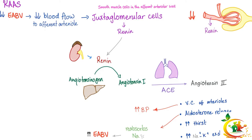Now let's talk about the renin-angiotensin-aldosterone system. If the effective arterial blood volume is low, blood flow to the afferent arteriole is low. The juxtaglomerular cells — specialized smooth muscle cells in the afferent arteriole wall — sense this and secrete renin. Renin converts angiotensinogen to angiotensin-1, which is converted to angiotensin-2 via ACE. Angiotensin-2 causes vasoconstriction of arterioles, raising blood pressure, and triggers aldosterone release, which reabsorbs salt and water, increasing effective arterial blood volume and correcting the problem.